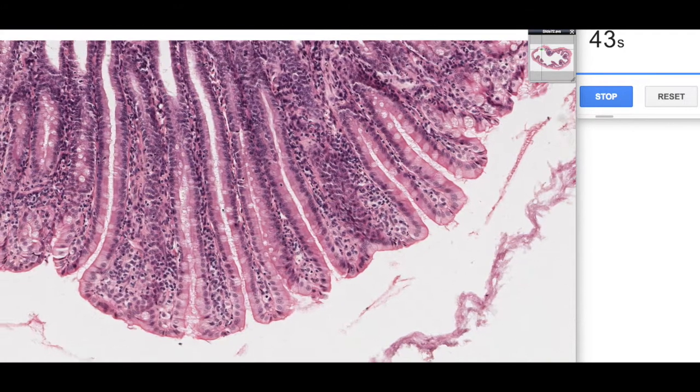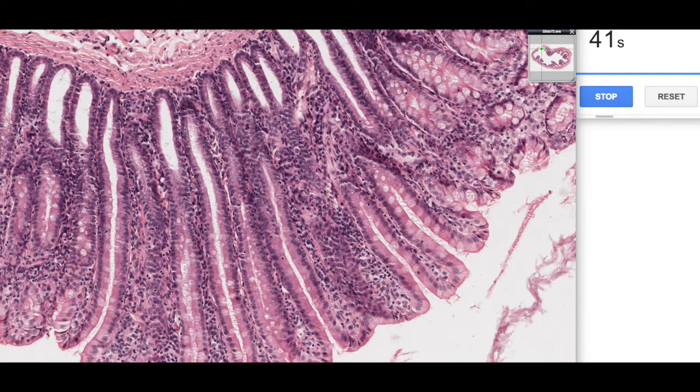So as I said, we have these simple straight tubular glands. Again, we find mitotic features down the base of these intestinal glands. We've got lamina propria in between.